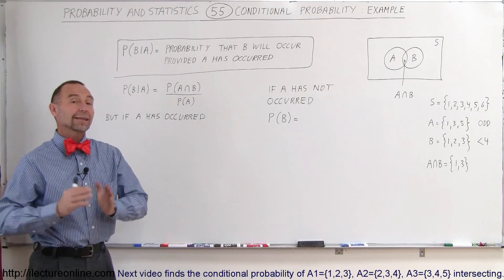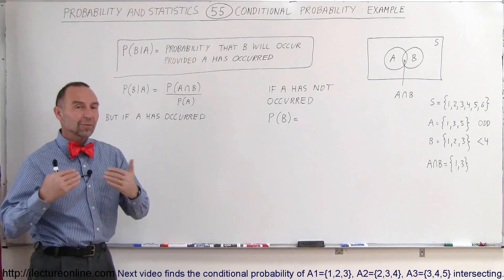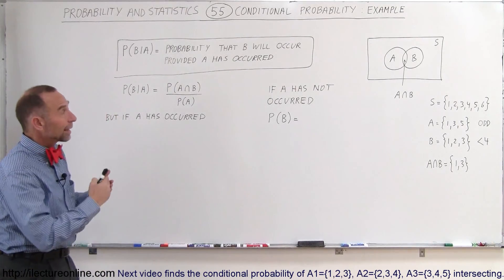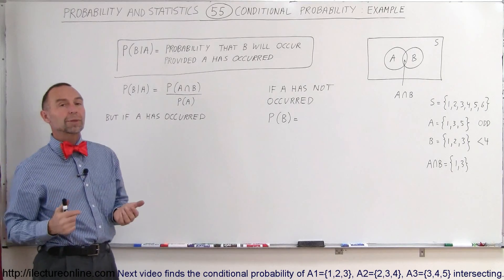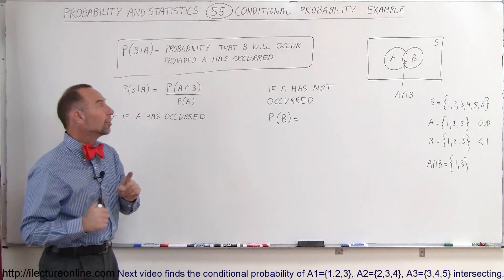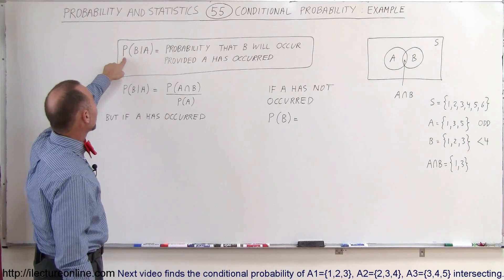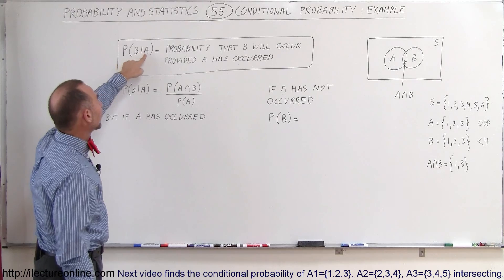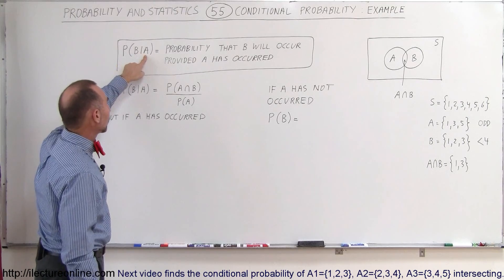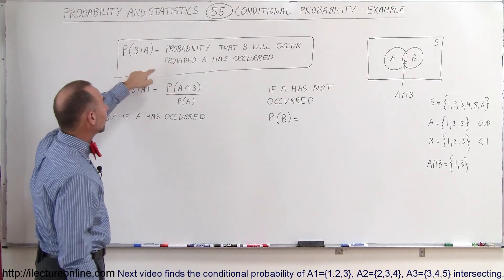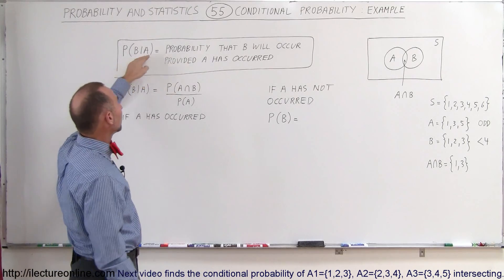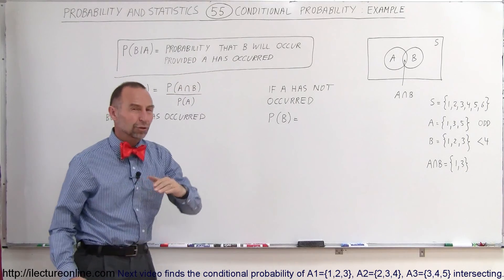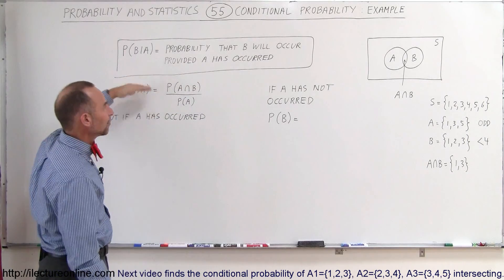Welcome to ElectronLine. We're going to do a simple example of how to apply conditional probability. Remember the notation: the probability that B will occur, provided that A has occurred, is written as P(B|A). This simply means the probability that B will occur, provided A has occurred — that's how we write that.